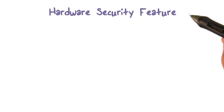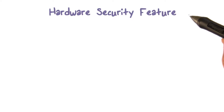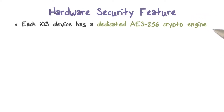Now let's take a look at the hardware security support in iOS devices. Each iOS device has a dedicated AES-256 crypto engine built into the direct memory access path between the flash storage and the main system memory. This makes file encryption highly efficient.